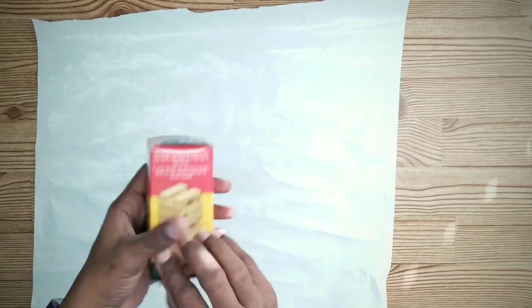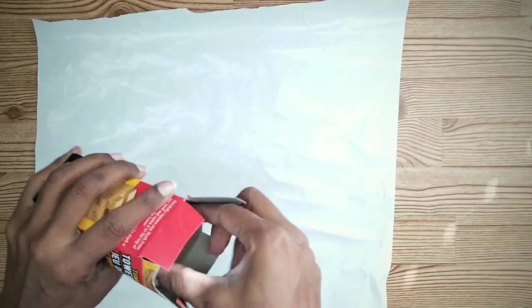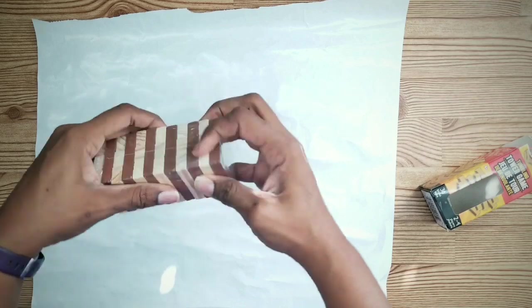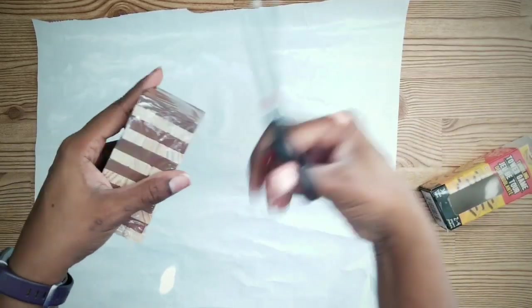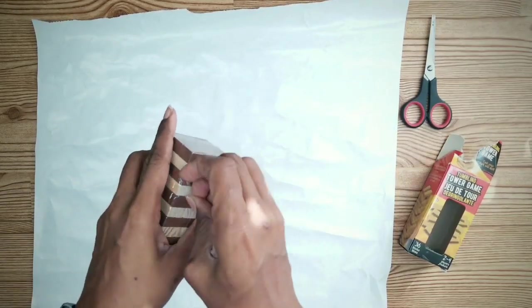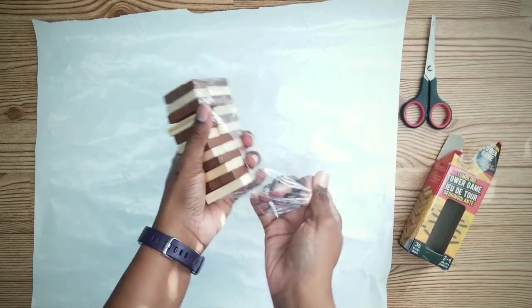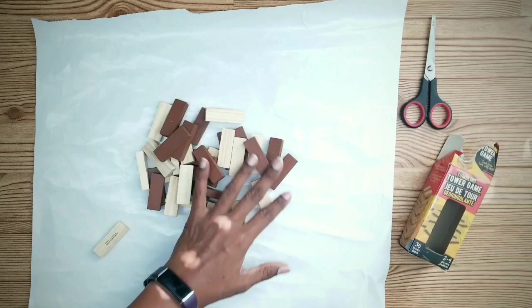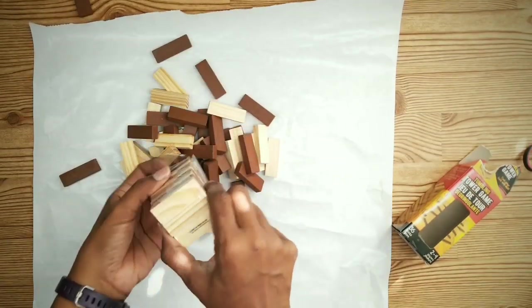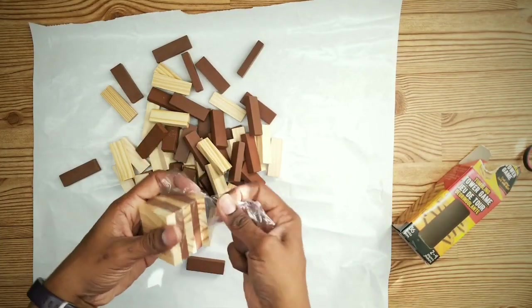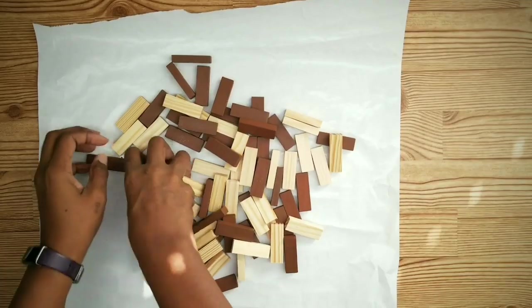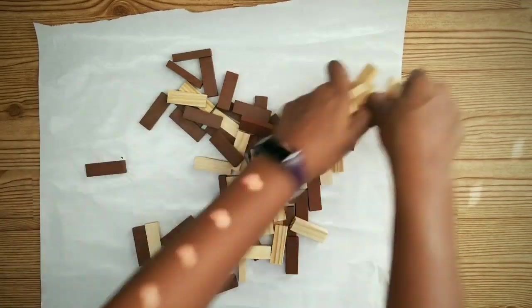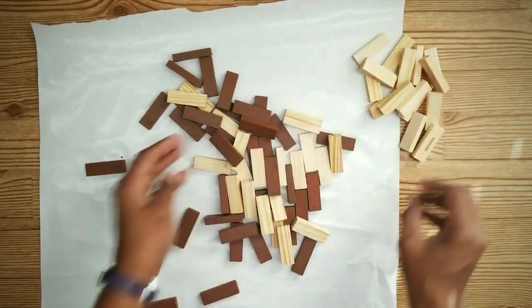The first thing you want to do is to remove all the packaging from your tumbling tower blocks. Separate your blocks by color if your set contains both dark and light blocks.